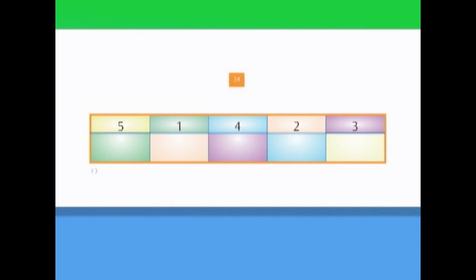Let's look at these numbers: five, one, four, two, and three. Which is the smallest number? Five, one, four, two, three. It's number one. So let's write number one in the first box.